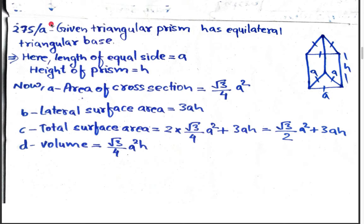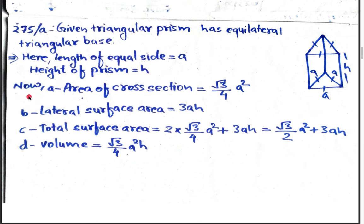Now we look at Question 275a. We are given a figure of a prism where both equal sides are denoted by a, the third side is also denoted by a, and the height is denoted by h. The given triangular prism has an equilateral triangular base, meaning the base is equilateral triangular.